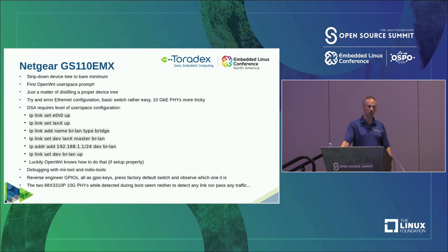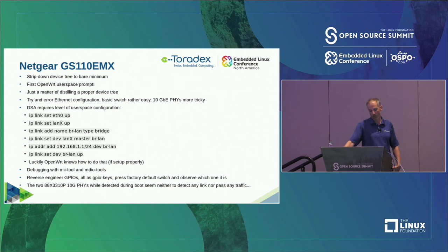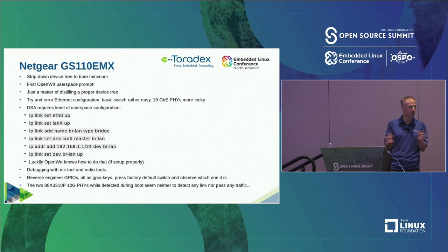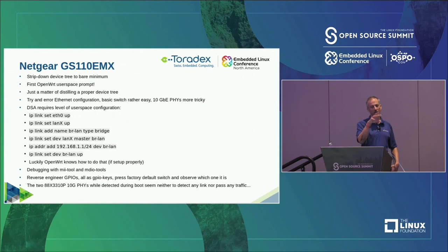Another thing to be aware of when playing with DSA is that if you just run mainline with a very bare user space, you also need some level of user space configuration. At the beginning none of these ports will actually do anything — you need to configure them. The most common thing is to create a bridge, telling the switch chip that all these ports are in the same network and should bridge packets between each other. Luckily in OpenWRT it already knows how to do that. Copying the ClearFog setup already has that included — I just extended it. They have a clever loop, so you just say 'I have LAN 1 to 10' and it adds everything.